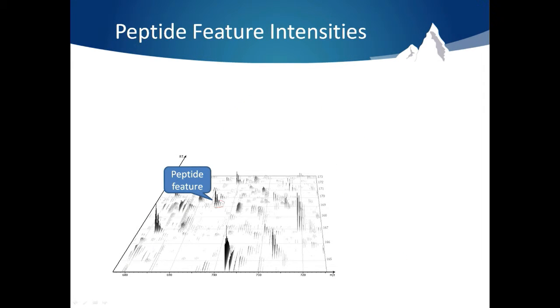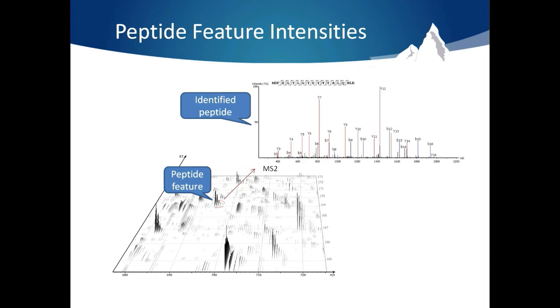We then have to group these peptide features. If that feature is selected as a precursor ion for MS-MS and then that MS-MS is identified we can link the two together. This is how we are able to match peptide feature intensity with an identified peptide.